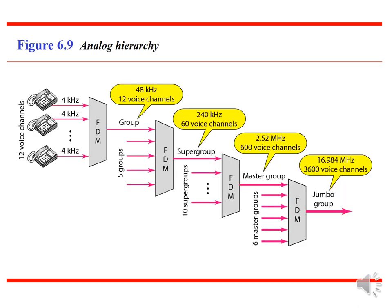Next comes the analog hierarchy. Initially we consider 12 voice channels, like telephone channels, each with a frequency of around 4 kilohertz. To form a single group, we need 12 voice channels, giving 12 × 4 = 48 kilohertz. To construct a super group, we need 60 voice channels or 5 groups, giving a frequency of 240 kilohertz. Similarly, we can construct a master group and a jumbo group with 600 and 3,600 voice channels respectively.